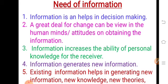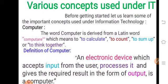So let us revise all these points. First: information helps in decision making. Second: a great deal of change can be viewed in the human mind's attitude on obtaining information. Third: information increases the ability of personal knowledge for the receiver. Fourth: information generates new information. Fifth: existing information helps in generating new information, new knowledge, and new theories. All these points are included in the need of information.